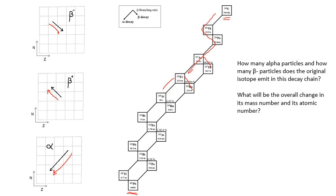Here's a little question for you to have a go at. Pause the video, have a think. And I'll show you the answer in 3, 2, 1. There you go. 7 alphas, 4 beta minuses. Mass number goes down 28. Atomic number, proton number goes down by 10.